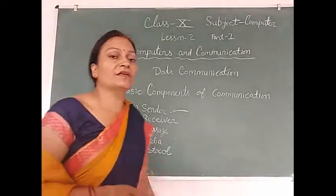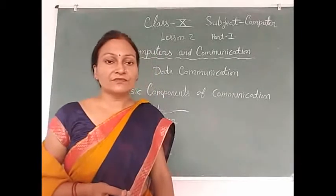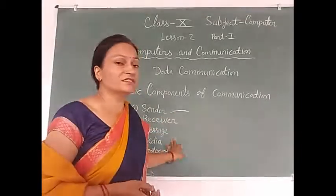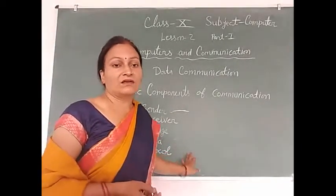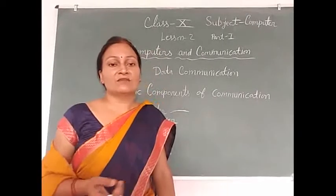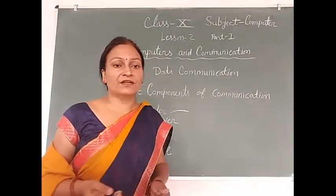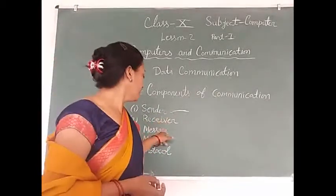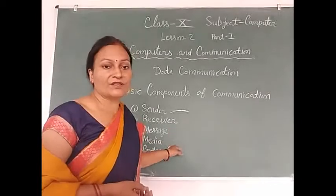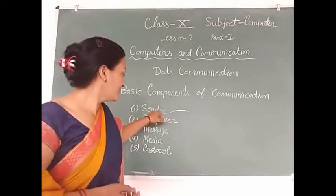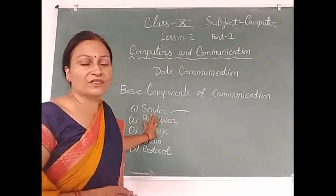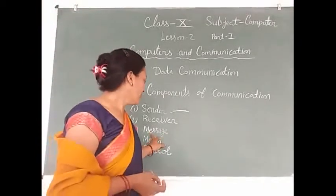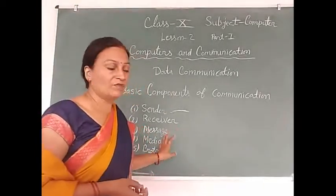The third component is message. Any information sent by the sender is called a message. A message may be an image, a file, a folder, a notice, etc. If there is a sender and receiver but no message, they will not communicate with each other. So, message is necessary for data communication.